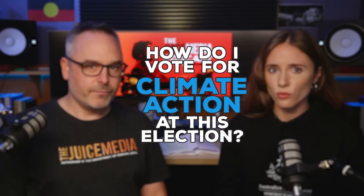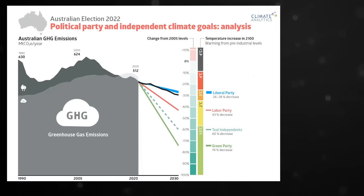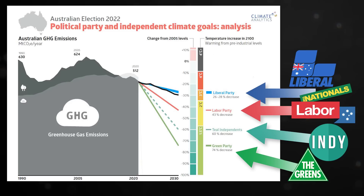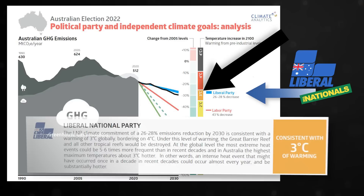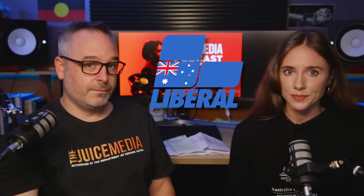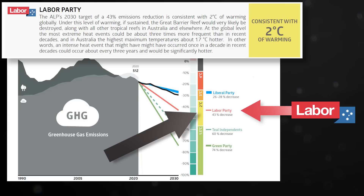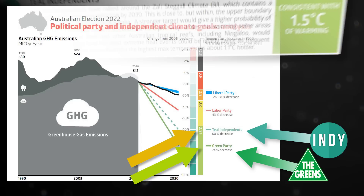Who should I vote for if I want to elect a candidate that's not shit on climate? I don't like to tell people who to vote for, but when you're dealing with climate you can just follow the science. Climate Analytics has put together an analysis showing the global warming consequences of the climate targets of the Liberal National Party, the Labor Party, the Teal Independents and the Greens, side by side. The current government's target puts us on track for three degrees of warming — double the safe limit of 1.5 degrees set at Paris. Labor's target puts us on track for two degrees — better than three, but still catastrophic. The Teal Independents and the Greens have targets that would keep us under the safe limit of 1.5 degrees of warming.